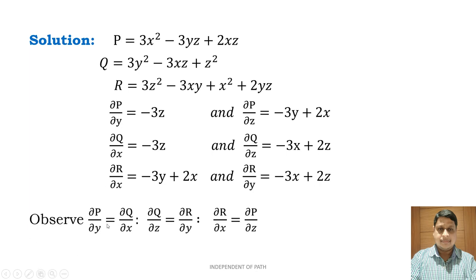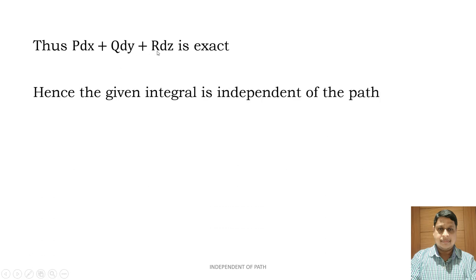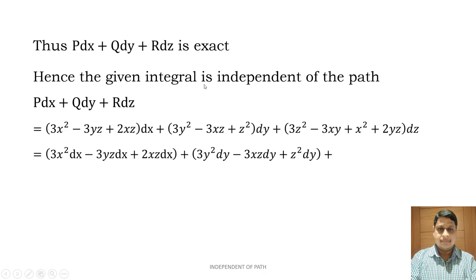Observe that ∂P/∂y = ∂Q/∂x, both equal to −3z. And ∂Q/∂z = ∂R/∂y, both equal to −3x + 2z. And ∂R/∂x = ∂P/∂z, both equal to −3y + 2x. Thus P dx + Q dy + R dz is exact and hence the given integral is independent of the path.